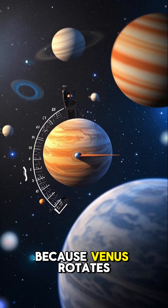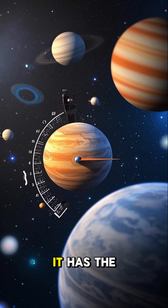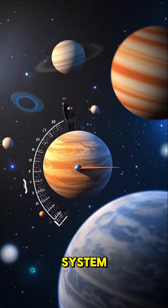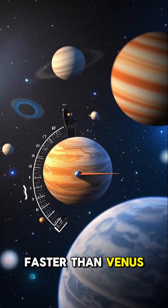Number two, because Venus rotates so slowly, it has the slowest rotation speed of any planet in the solar system. Even Saturn rotates faster than Venus.